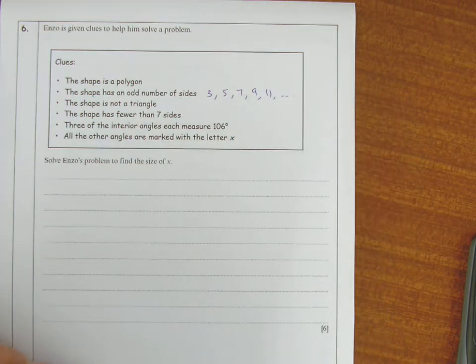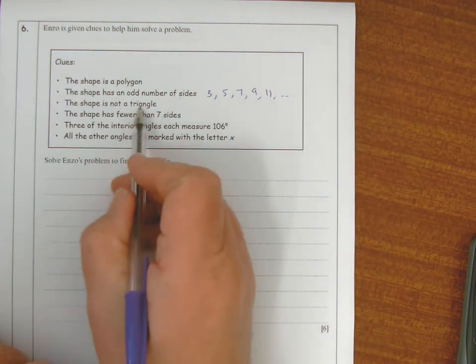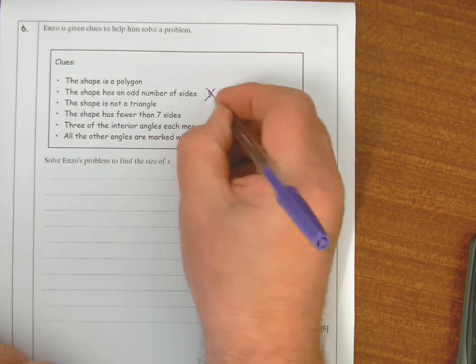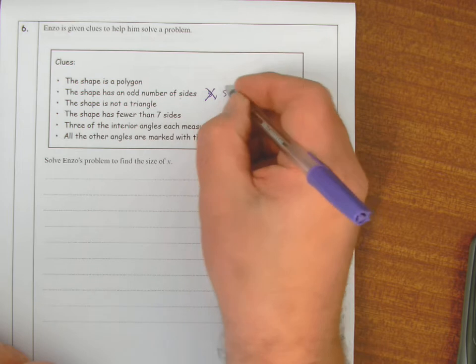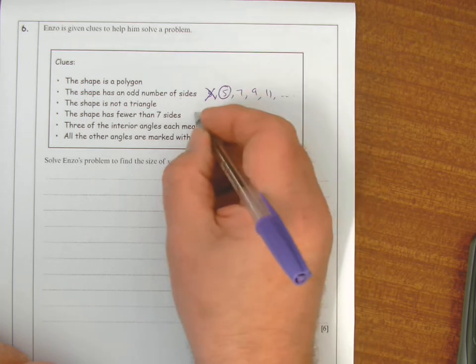Okay, those are possible. The shape is not a triangle, so I can't have a three-sided shape. The shape has fewer than seven sides, so it's got to be a five-sided polygon.